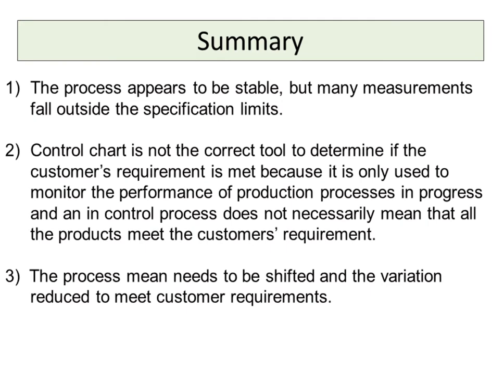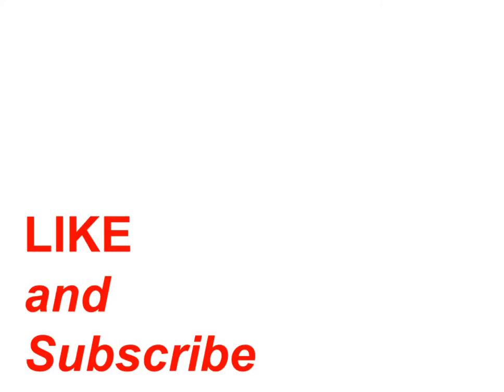In summary, the process appears to be stable, but many measurements fall outside the specification limits. A control chart is not the correct tool to determine if the customer's requirement is met, because it is only used to monitor the performance of production processes in progress, and an in-control process does not necessarily mean that all products meet the customer's requirement. The process mean needs to be shifted and the variation reduced to meet customer requirements. Thanks for watching. Remember to subscribe to my channel.